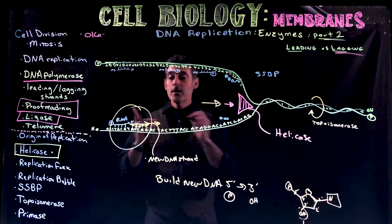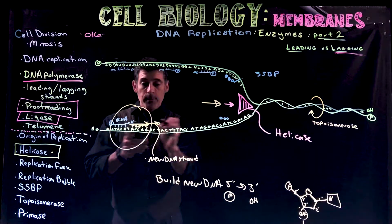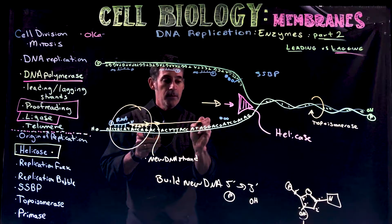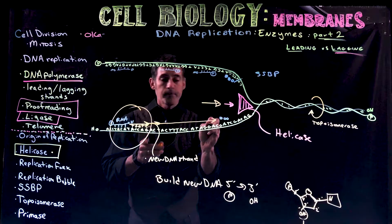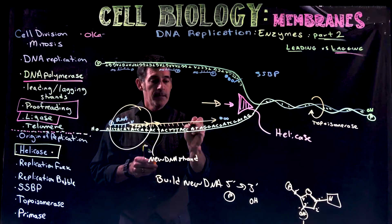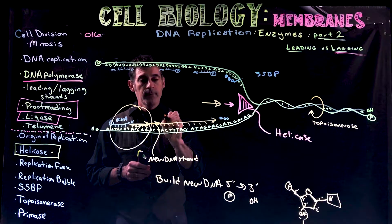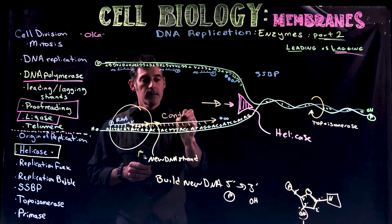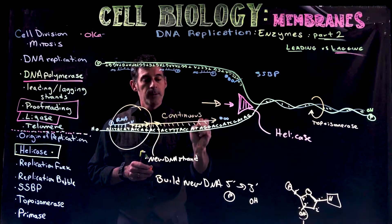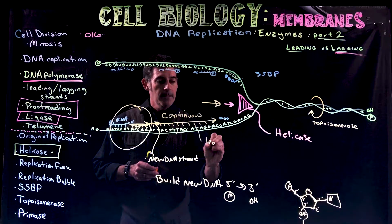That's the only way it works, the only way it builds. For this strand, as replication proceeds, the polymerase just keeps moving continuously, building new DNA. So we have what's called continuous replication, and we call that the leading strand.